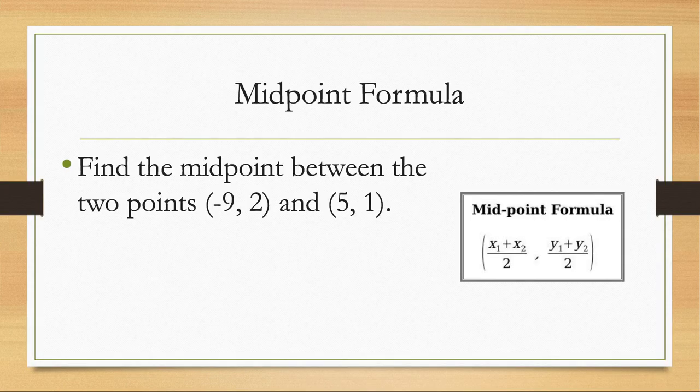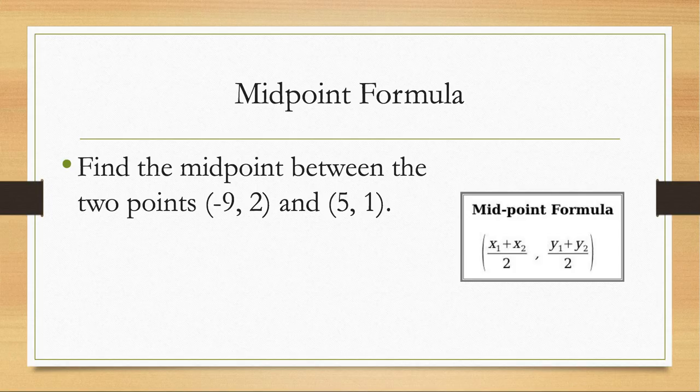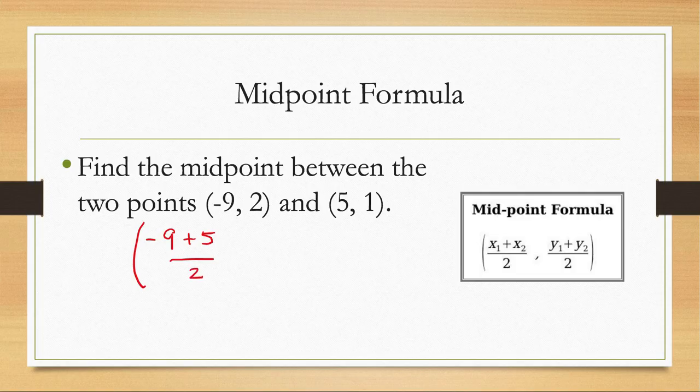Let's look at one additional example for midpoint formula. So we have the points (-9, 2) and (5, 1). Again, we're going to begin by identifying our two x values, which would be -9 and positive 5, and we're going to add those together, dividing by 2. Then we're going to add our y values together. So that's going to be a 2 and a positive 1.